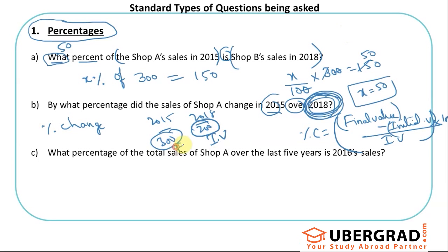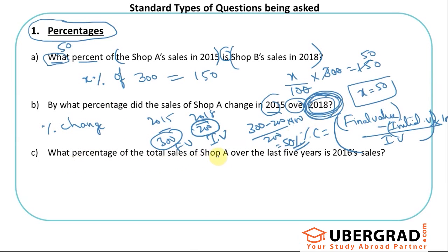So 2018 is the initial/base value and 2015 is the final value. Therefore: (300 − 200) / 200 × 100 = 100/200 × 100 = 50%. The percentage change is 50%. This logic also applies if the question were phrased as 'by what percentage is Shop A sales in 2015 more or less than 2018' — the base is still 2018.